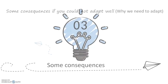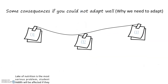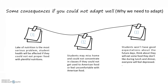Now let me talk about some consequences if students cannot adapt well. Lack of nutrition is the most serious problem — student health will be affected if they cannot eat proper food with plentiful nutrition. Students may miss home and be unable to concentrate in classes if they cannot get used to American food or feel uncomfortable with it. Students may have poor expectations about future days, and thinking about having to eat food they don't like during lunch and dinner can make everyone feel depressed.